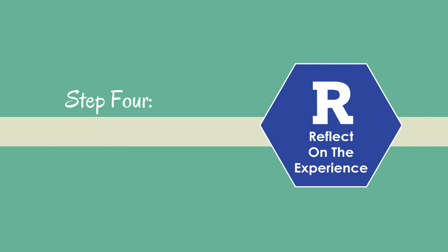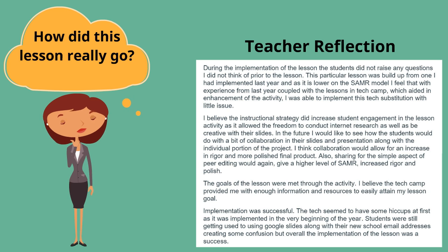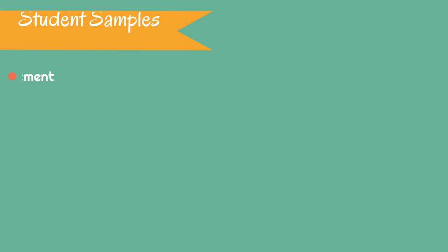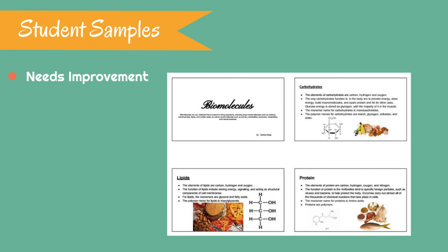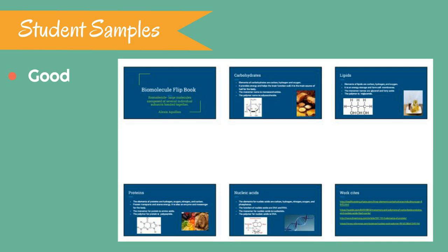The second to last step is Reflection, and this just might be one of the most powerful parts to this entire process. Here, teachers are not only asked to answer questions about the lesson, but they are also asked to evaluate student work and submit three samples that demonstrate needs improvement, proficient, and advanced levels of learning from their students. Teachers must reflect on the impact of instructional coaching, increase student engagement if lesson goals and student outcomes are met, and evaluate whether they personally thought the implementation process was successful.